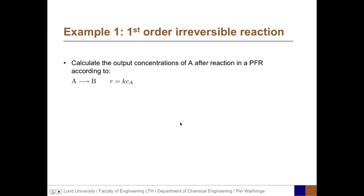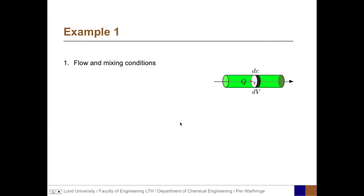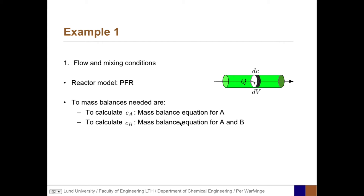Example 1: Calculate the output concentration of A after a first-order irreversible reaction A → B with rate r = k·C_A. Data: C_A,in = 3 mol/m³, C_B,in = 0.1 mol/m³, k = 0.5, reactor volume = 5, volumetric flow rate q = 1.25 m³/min. The reactor is a PFR. We solve the mass balance for A: the design equation in residence time coordinates is r_A·dθ = dC_A.